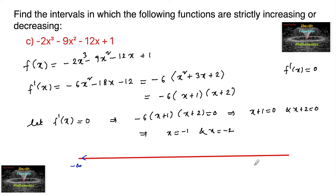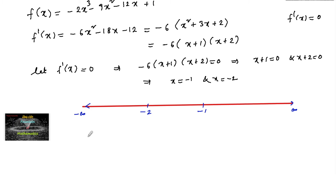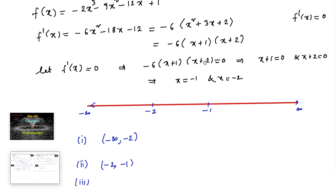On the real number line from minus infinity to plus infinity, the points -2 and -1 divide the entire real number line into three regions. The first region is (-∞, -2), the second is (-2, -1), and the third region is (-1, +∞).